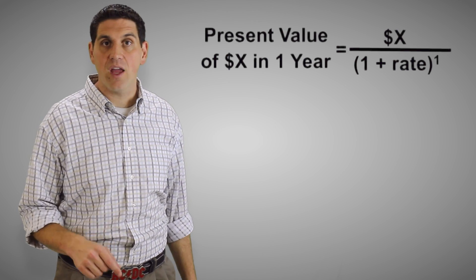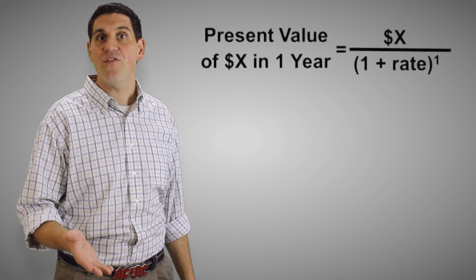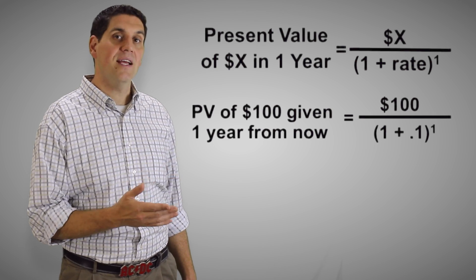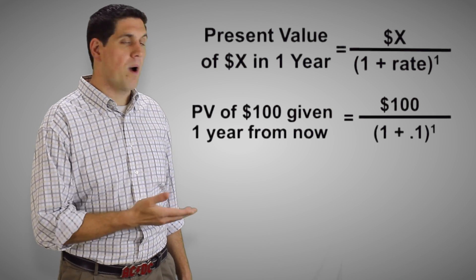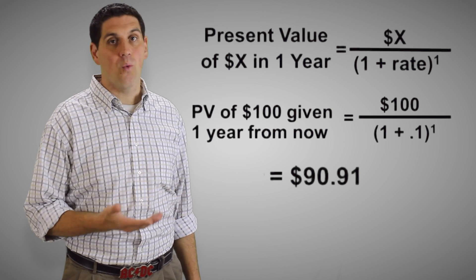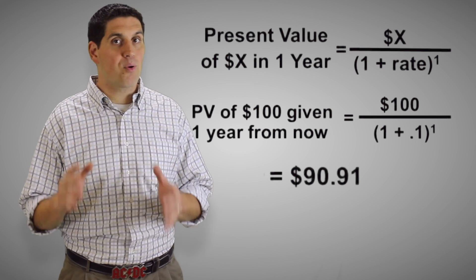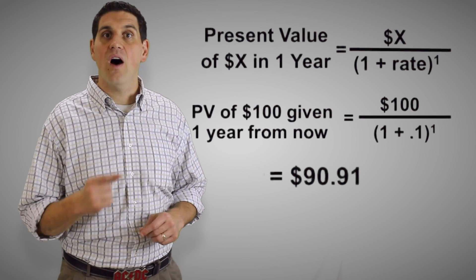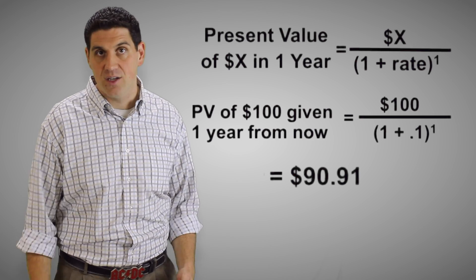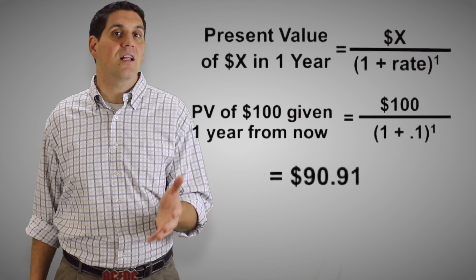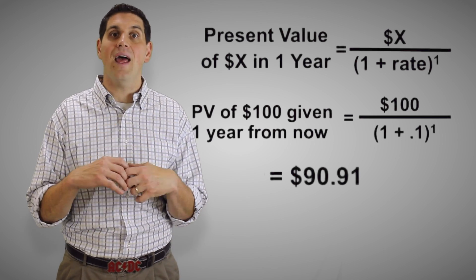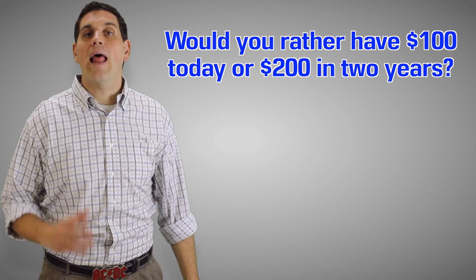So let's find out the present value of that $100 a year from now. It's $100 divided by 1 plus the interest rate of 0.1. And that comes out to be $90.91. That's the present value of $100 in one year from now, given a 10% interest rate. So again, it's clear — you should definitely take the $100 today as opposed to $100 in the future.